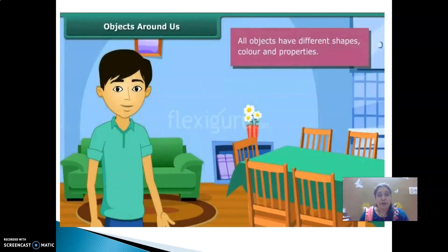Objects around us — look around you. You can see many things like table, chair, your laptop, your wardrobe full of clothes, isn't it? All these things are nothing but objects, and all these objects are made of one or more types of materials. Some commonly used materials are wood, plastic, glass, etc. All these objects have different shapes, color and properties.